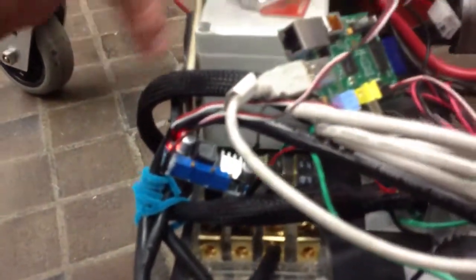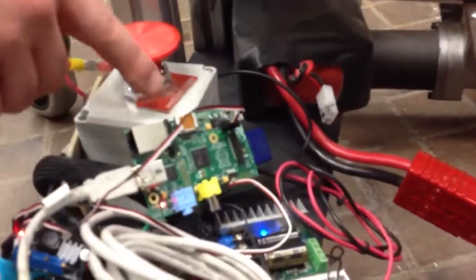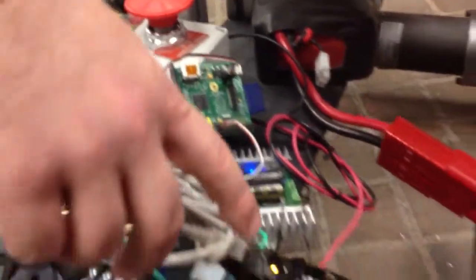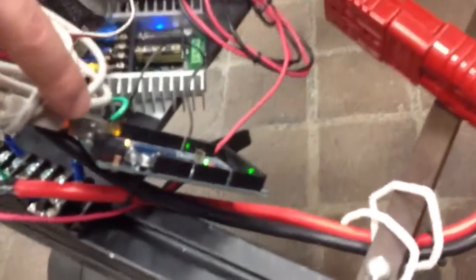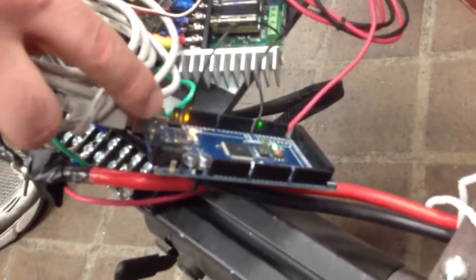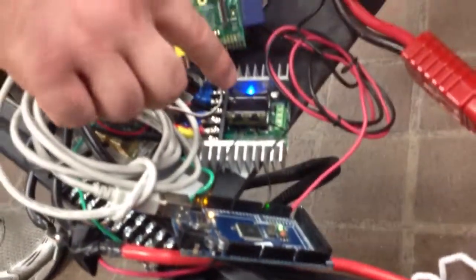A buck converter is being used to step down 25.9 volts from the battery to 5 volts for the Raspberry Pi. The Raspberry Pi is supplying the power needed for the Arduino. And the Arduino is supplying the serial data used to control our motor controller.